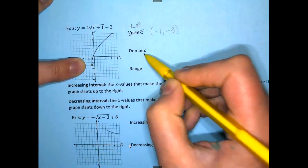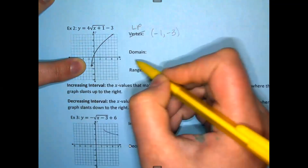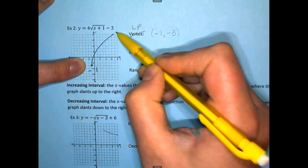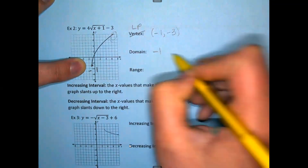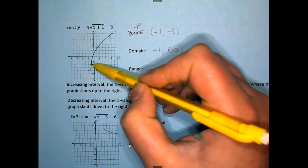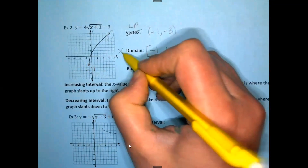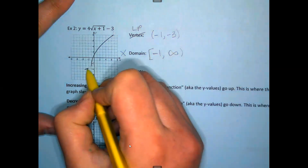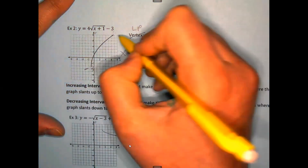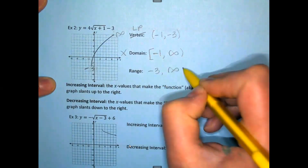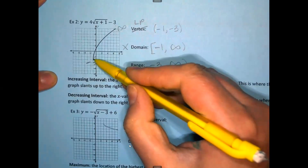For the domain: the graph stops at the locator point on the left. It goes left only to x = -1, and then it goes to the right all the way to infinity. So the domain is [-1, ∞). Infinity always gets a parenthesis because you can never touch it, but -1 is a number we can touch, so that gets a bracket. For the range: the graph goes down to y = -3 and up to infinity, so the range is [-3, ∞).